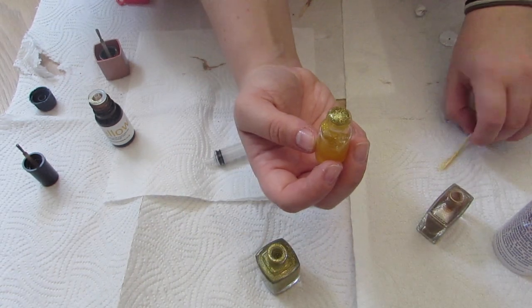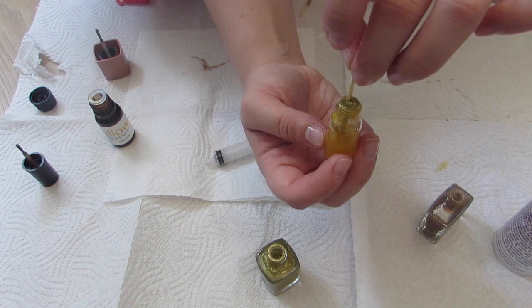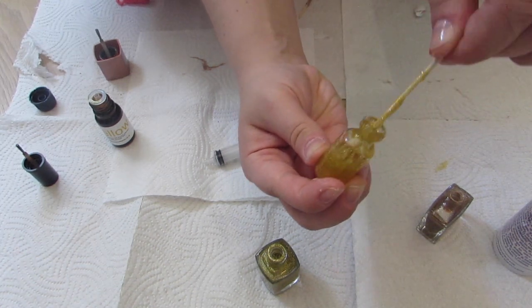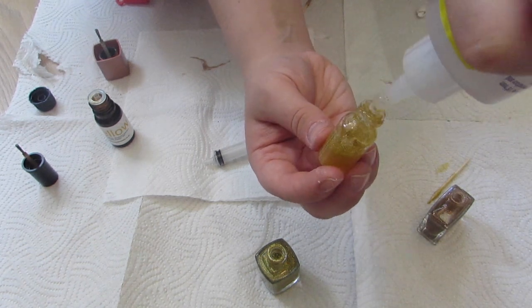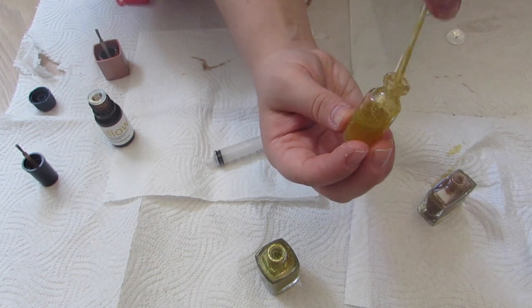You can see I've added some more gold nail varnish now. It can be a little bit tricky getting the liquid inside the bottle because the hole is so small, but just keep going and pushing it in with your cocktail stick and it will work eventually.